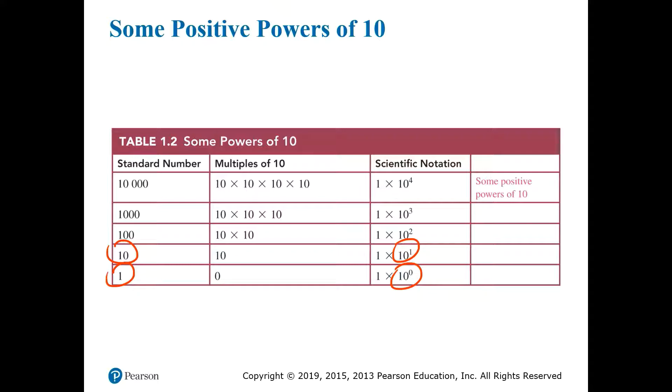After that, we have 10 to the second power, or 10 squared, which means multiplying 10 by itself two times. 10 times 10 equals 100. Then 10 to the third power is 10 times 10 times 10, which equals 1,000, and so on. As you can see, raising 10 to any positive power gives you a number that's 10 or greater.